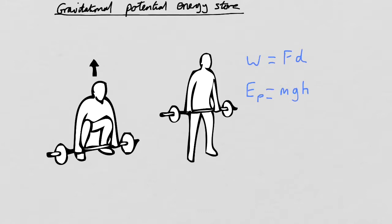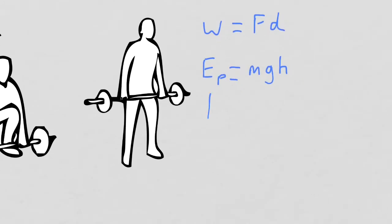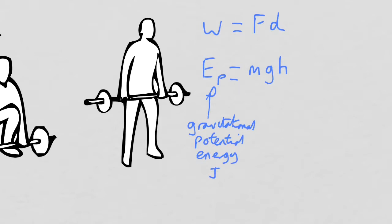The MG comes from the force, which is the force of weight — mass times gravitational field strength — and the H is just the distance that you move it, the height that you lift it. Gravitational potential energy is measured in joules, mass in kilograms, and gravitational field strength on Earth is 9.8 newtons per kilogram — that value will be given to you in an exam. On other planets it will be different; they may have a stronger or weaker gravitational field.